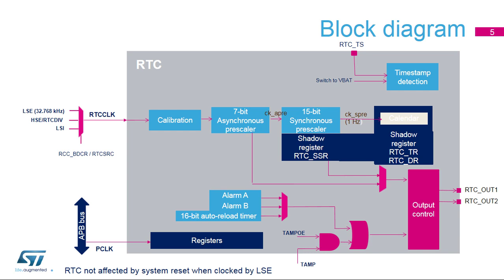The RTC embeds two flexible alarms, based on comparison with the calendar value. The alarm flags are set if the calendar sub-seconds, seconds, minutes, hours, or date match the value programmed in the alarm registers. The alarm event can wake up the device from all low-power modes. The alarm event can also be routed to the specific output pins RTC-OUT1 and RTC-OUT2 with configurable polarity. The calendar alarm's sub-second, seconds, minutes, hours, or date fields can be independently masked or not masked for the comparison.